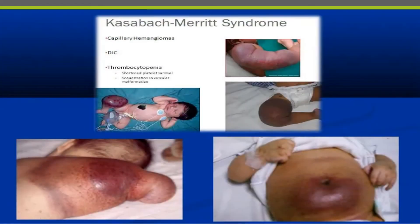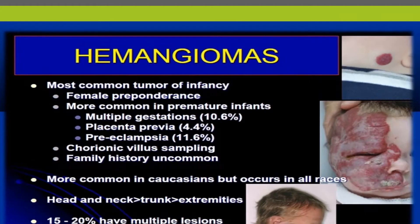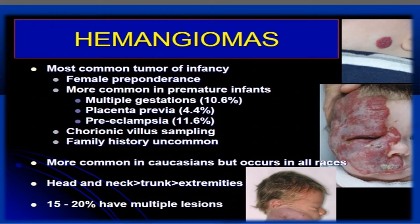This is an image of Kasabach-Merritt syndrome showing a kaposiform hemangioendothelioma, characterized by thrombocytopenia which is due to shortened platelet survival and sequestration in the vascular lesion.